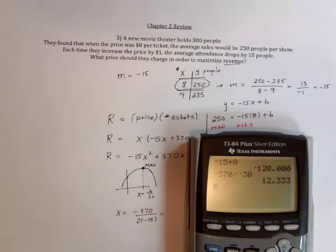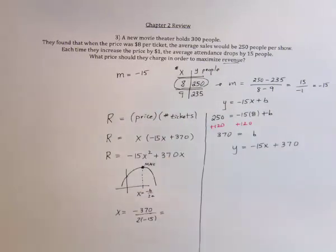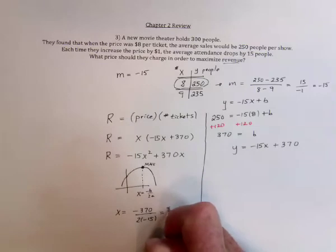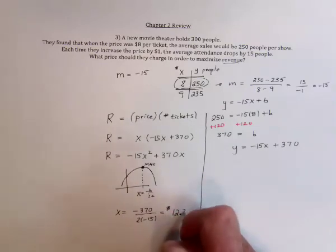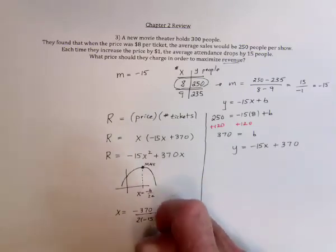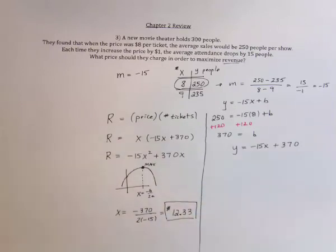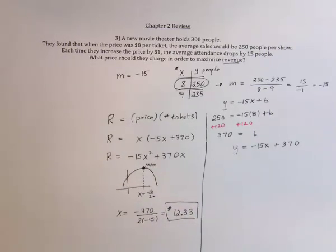So that's going to be $12.33. Since we're talking about money, it's going to need to be two decimal places. So they should be charging $12.33 in order to maximize their revenue. That, and sell a lot of popcorn.